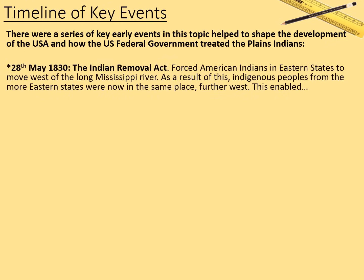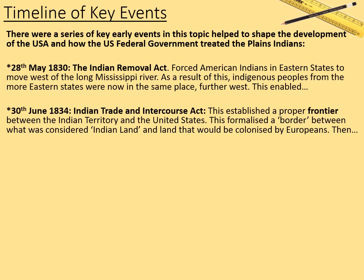Firstly, on the 28th of May 1830, we have the Indian Removal Act. This forced American Indians in the eastern states to move west of the Mississippi River. As a result, indigenous peoples from the more eastern states were now in the same place further west. This enabled, on the 30th of June 1834, the Indian Trade and Intercourse Act, which established a proper frontier between Indian territory and the United States, formalizing a border between Indian land and land that would be colonized by Europeans.